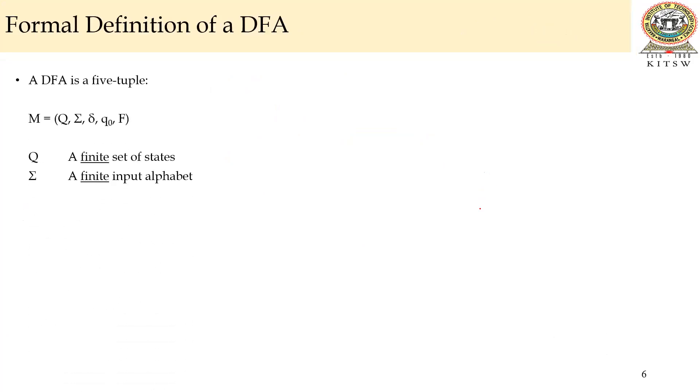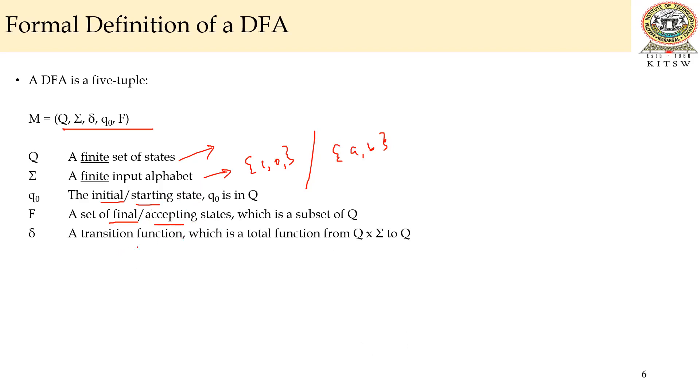The formal definition of DFA is, it's a five-tuple automata, finite automata. Q is a finite set of states, that is Q1, Q2, Q3, and so on. The sigma is input alphabets or numbers, whatever it may be. Then the Q0 is an initial state or start state. F is a final state or accepting state. And the gamma is a transition function.